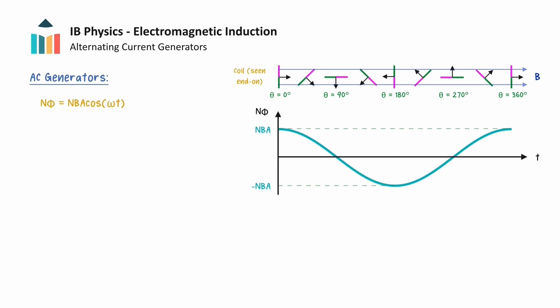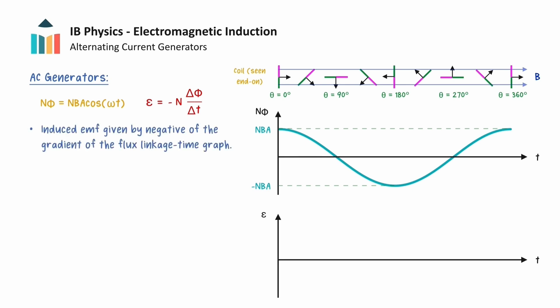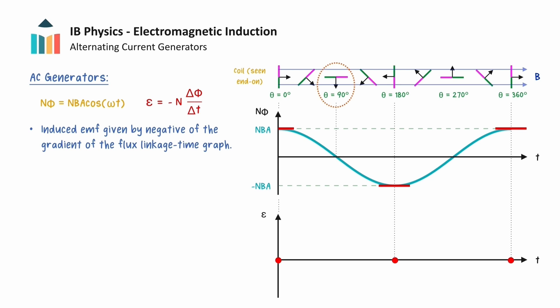We can now consider a graph that shows the variation of the induced EMF with time. We know from Faraday's law of induction that the induced EMF is equal to the negative rate of change of magnetic flux linkage with time. So the induced EMF at each instant of time can be found from the negative of the gradient of the flux linkage time graph. When the plane of the coil is perpendicular to the magnetic field, the gradient of the flux linkage time graph is 0, so the EMF induced at these times will be 0. When theta equals 90 degrees, the flux is decreasing most rapidly, and the gradient will be most negative at this time. Therefore, this results in the largest positive induced EMF from Faraday's law.